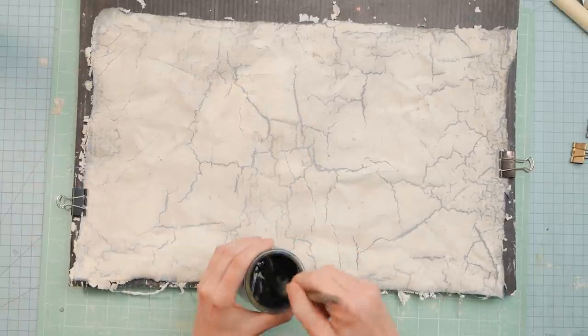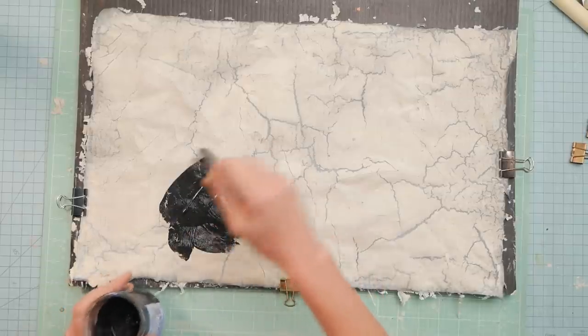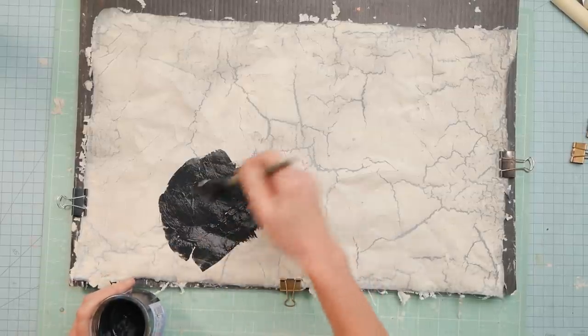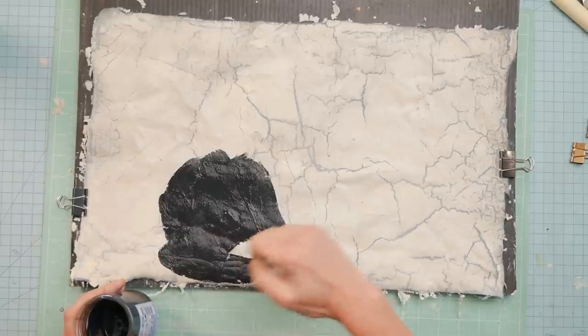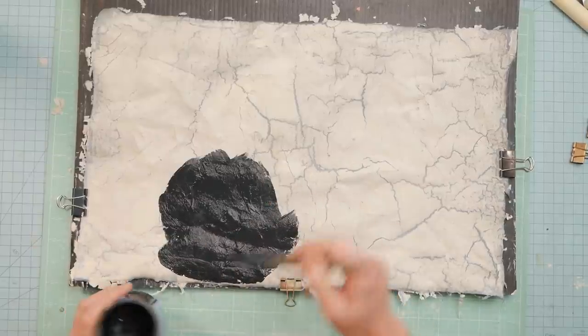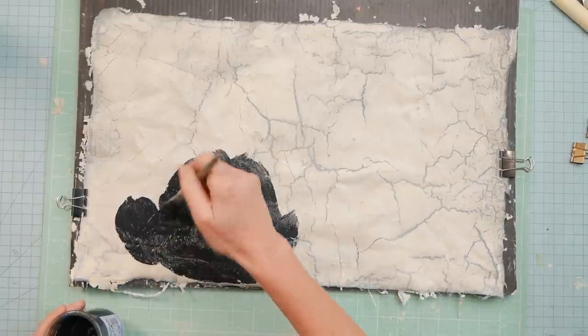that's when I took some black acrylic paint with just a little bit of water. And I didn't want the paint to be too goopy, won't seep through the cracks. So you want it a little thinner.